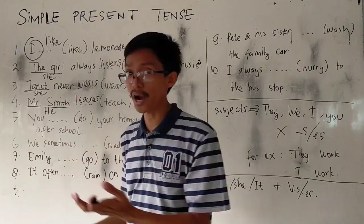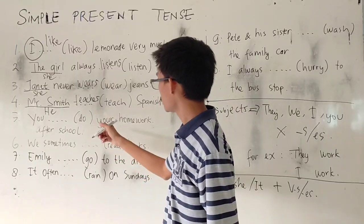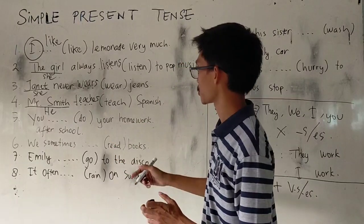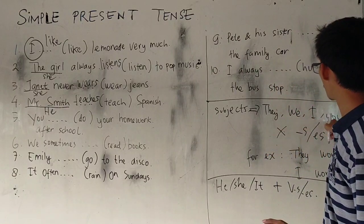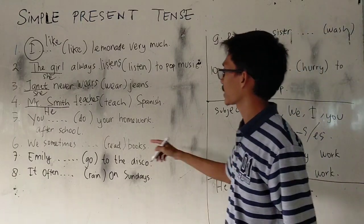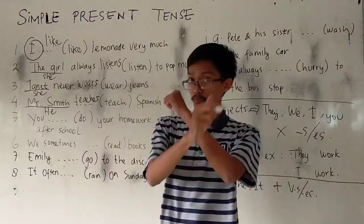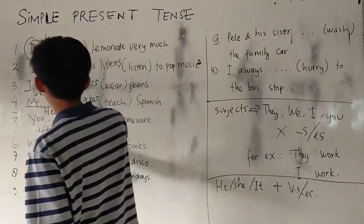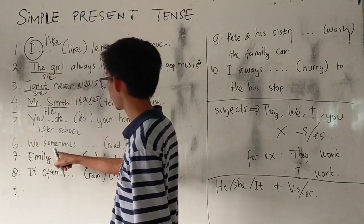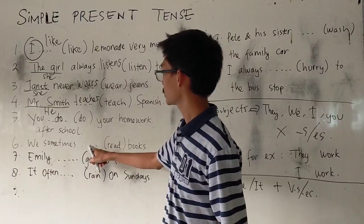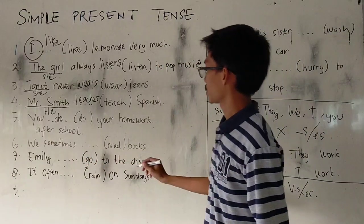Number five: you do your homework after school. If the subjects are I, we, you, or they, don't add S or ES to the verb — no S or ES. So: you do your homework. Number six: we sometimes — greet.